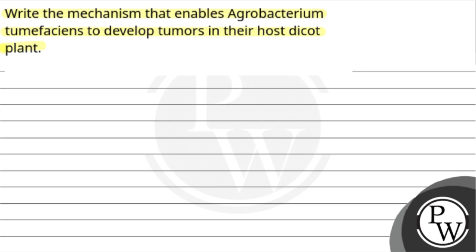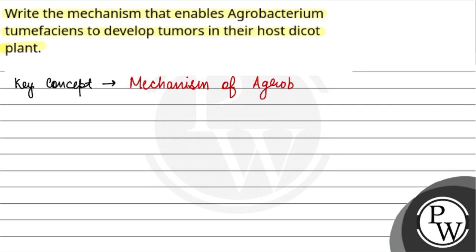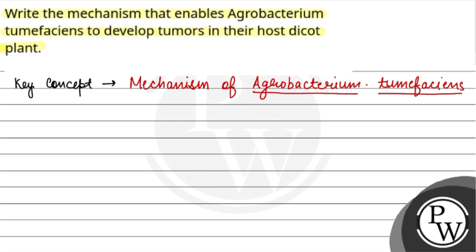That's the mechanism we need to explain. So the key concept of our question will be: the mechanism of Agrobacterium tumefaciens to develop tumours in host plants.